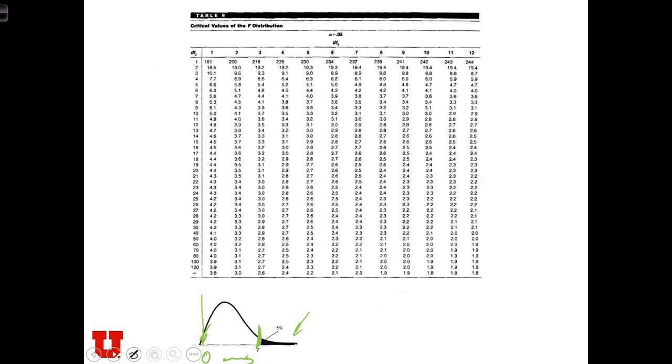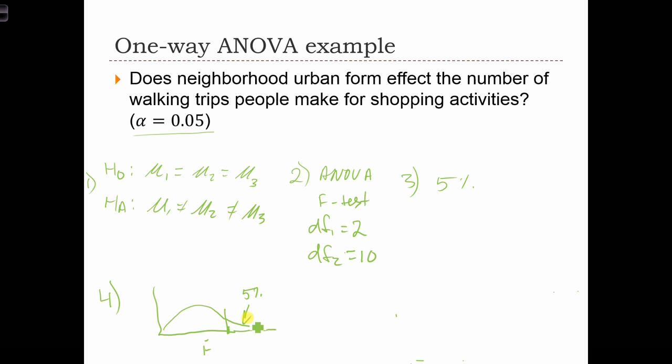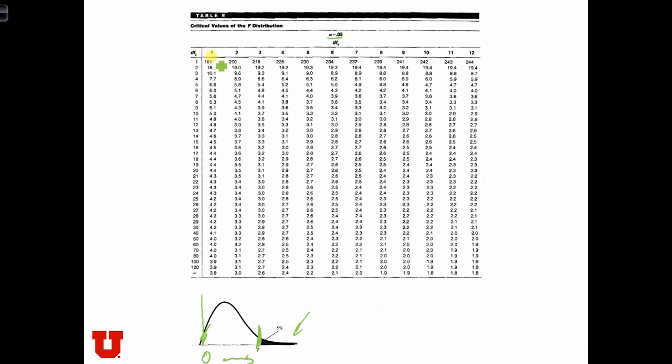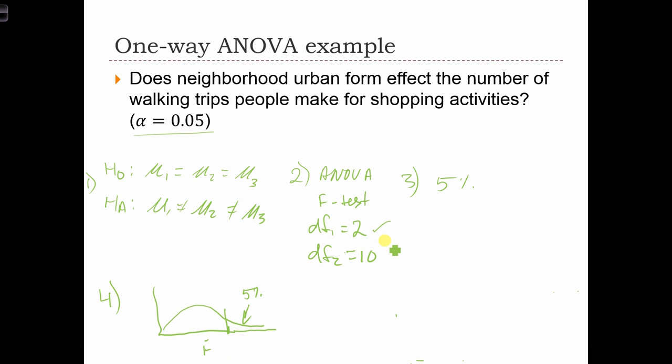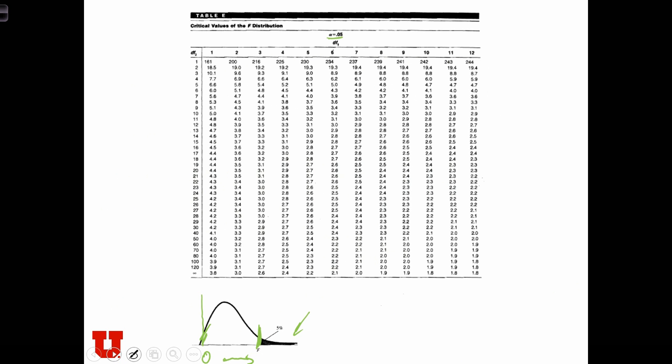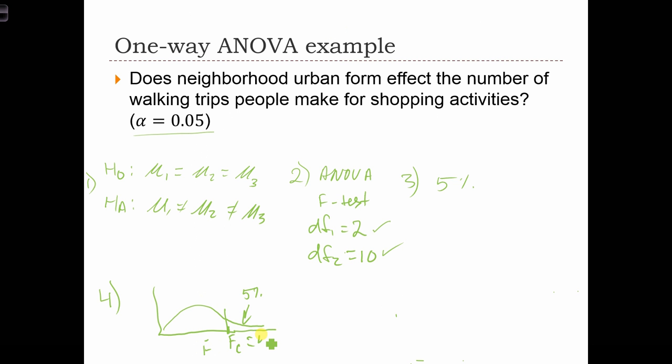So what is this critical F statistic going to be? Well, in order to do this, we can use our table. Table E has several pages, depending on the amount of significance, and also the range of the degrees of freedom differs from page to page of the table. We see that this pertains to the case where alpha equals 5%. There's another table for when alpha equals 1% that you can use. And what we are going to do is find the corresponding DF1s and DF2s. We see that DF1 equals 2 and DF2 equals 10. So we go across to DF1 equals 2 and down to 10, and we see that the critical value is 4.1. So FCrit equals 4.1.